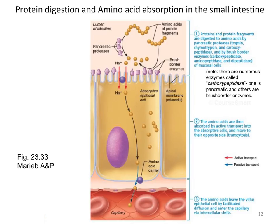There are brush border enzymes that cleave the dipeptides and short oligopeptides into single amino acids, and then there are transporters that actively transport the amino acids into the intestinal enterocytes. There are amino acid carriers that then allow these amino acids to cross and eventually enter the portal blood system. This process is very similar to the absorption of sugars that we saw in the first video.